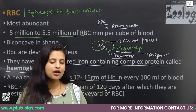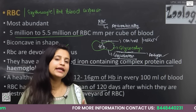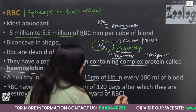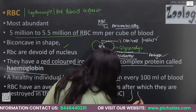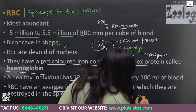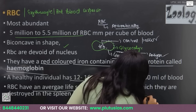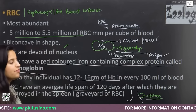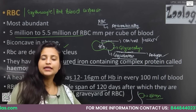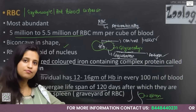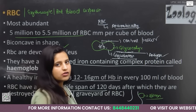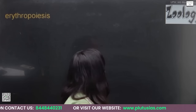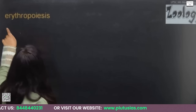RBCs have an average lifespan of about 120 days. After completing their lifespan, they die in the spleen, which is located behind the stomach. That's why the spleen is also known as the graveyard of RBCs.